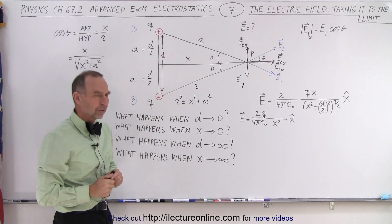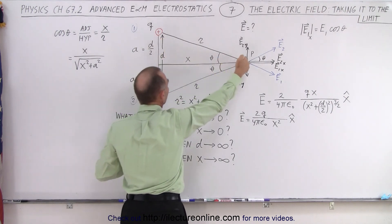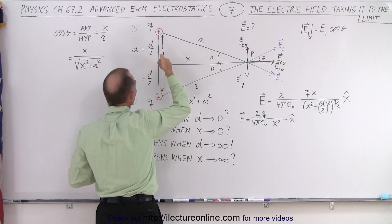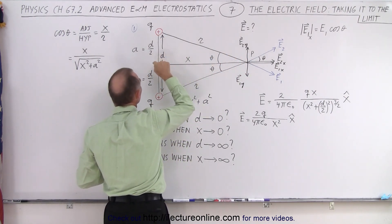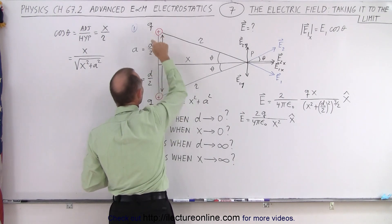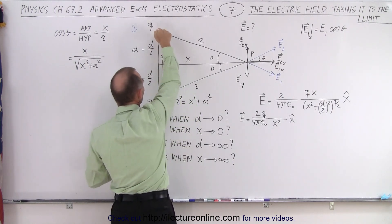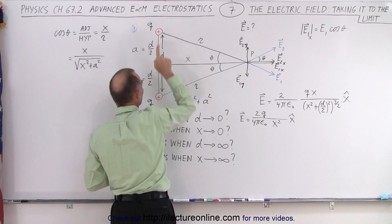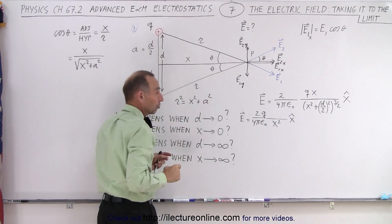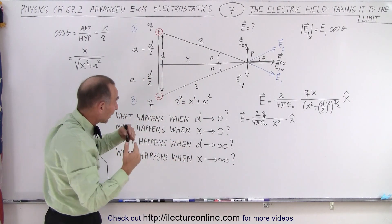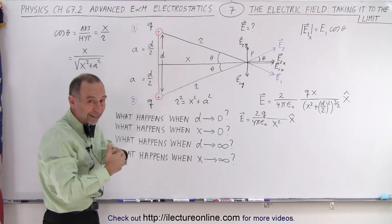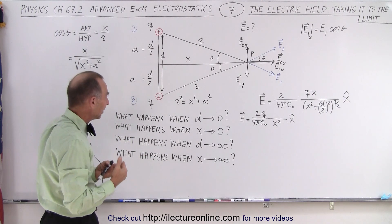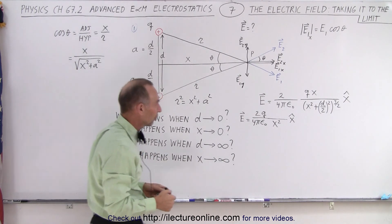What if we let x go to 0 instead? So we keep the two charges there. Now we bring x right there in the middle. Notice we're now in the middle between two positive charges. The electric field will be pointing in this direction due to this charge, in this direction due to this charge. Because of symmetry the magnitude should be the same. So they should essentially cancel each other out. Is that the case when we let x go to 0?